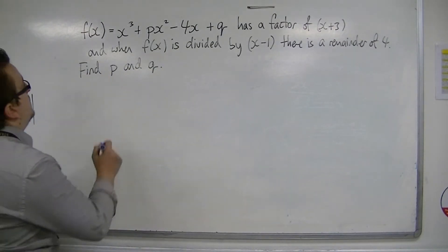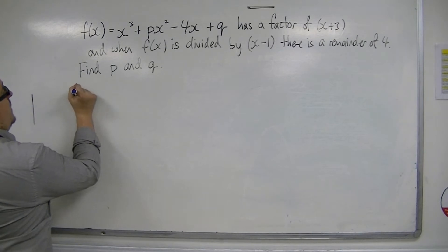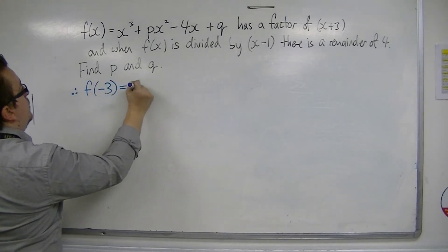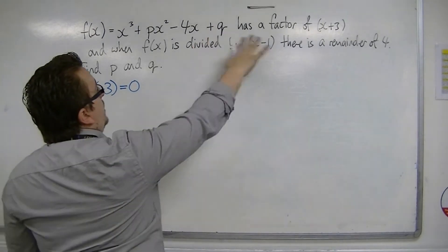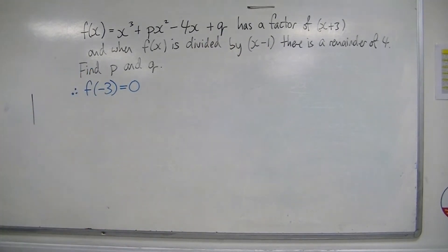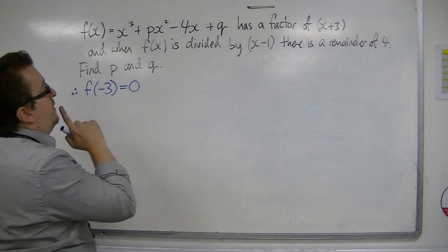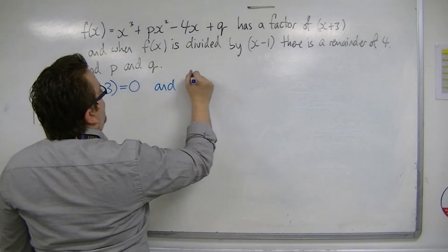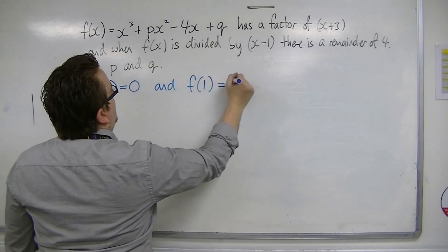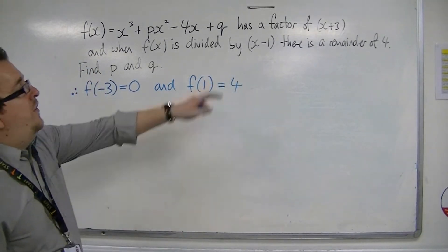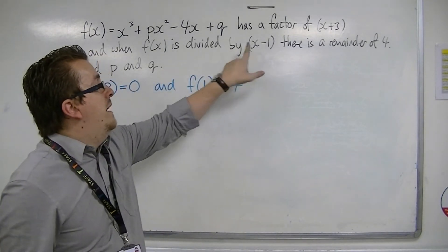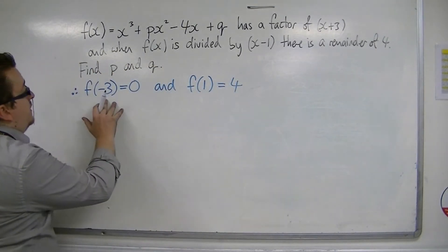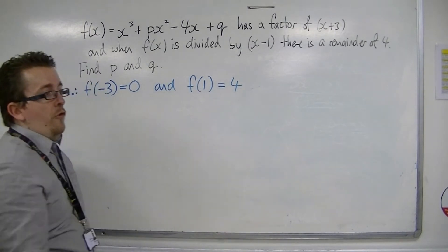So that means that f of minus 3 is 0, because x plus 3 is a factor. And f of 1 must be equal to 4, because when we divide f of x by x minus 1, we get 4. So that's the factor theorem in play, and that's the remainder theorem.